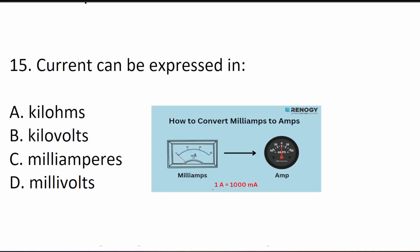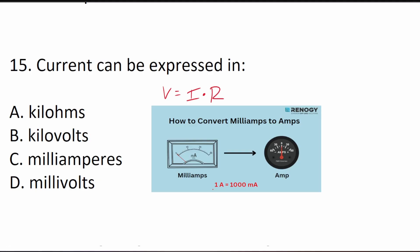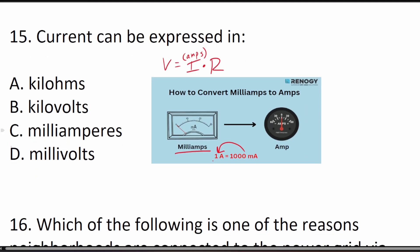Question 15 asks: current can be expressed in what unit? From Ohm's Law, voltage in volts equals current in amps times resistance in ohms. Current is always given in terms of amps. However, there is another unit of measurement for amps — milliamps. There are 1,000 milliamps in one amp, also called milliamperes. So the answer is C.